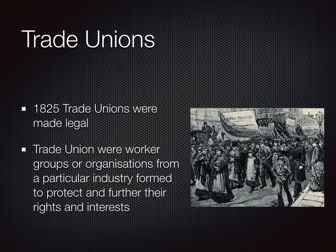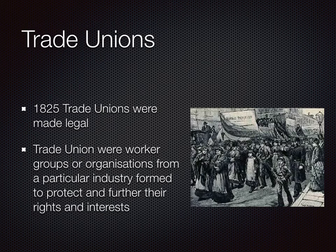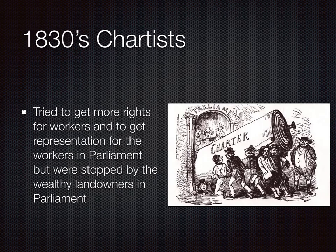This human misery led to people trying to protect these vulnerable workers. In 1825, trade unions were finally made legal. Trade unions were worker groups or organisations from a particular industry formed to protect and further their rights and interests. Trade unions didn't really get any power until 1875 when they were given the right to strike, but getting organised in 1825 was a big step. In the 1830s, there was also an organisation called the Chartists, who tried to get more rights for workers and representation in Parliament, but they were stopped by the wealthy landowners in Parliament.